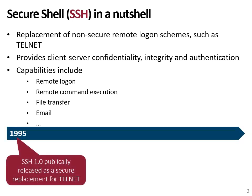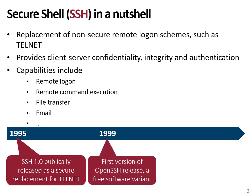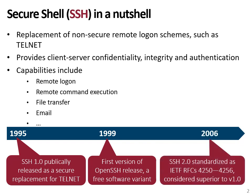Let's take a look at the history timeline of SSH. The first version, SSH 1.0, was publicly released in 1995. In 1999, the first version of OpenSSH, which is a free software implementation of SSH, was released. And in 2006, SSH 2.0 was standardized in different IETF RFCs. This version is considered superior and more secure than SSH 1.0.